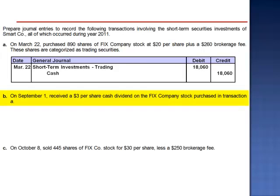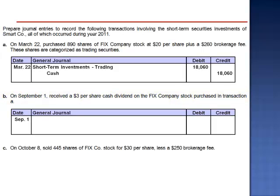Letter B: On September 1st, received a $3 per share cash dividend on the FIX Company stock purchased in Transaction A. The journal entry is a debit to cash — 890 shares multiplied by $3 per share — a total of $2,670, and a credit to dividend revenue.